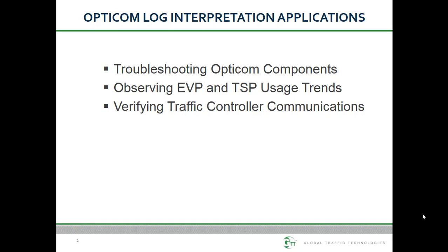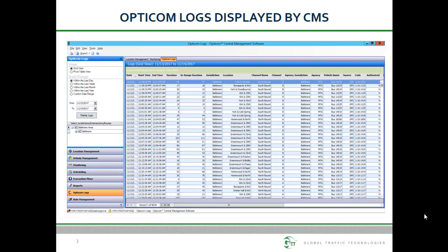Different people within our customer base have different goals for the information contained within OptiCom logs. Common uses of the data include troubleshooting OptiCom system components, observing EVP and TSP vehicle usage trends, and verifying traffic controller communications. Throughout this session we will review the logs retrieved from the on-site software directly connected to either a 764 face selector or a 2100 series OptiCom GPS vehicle kit.